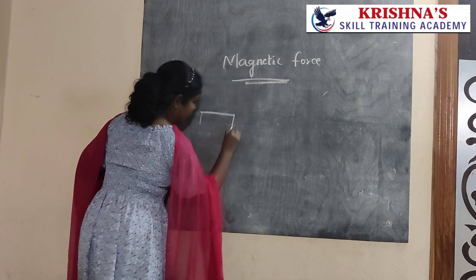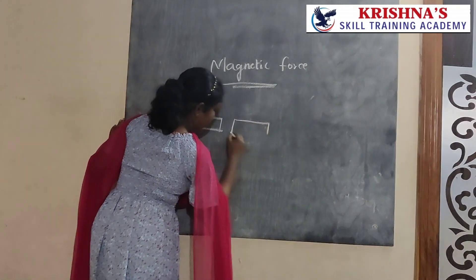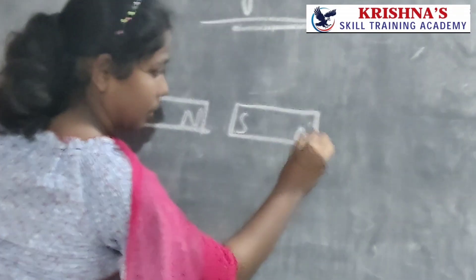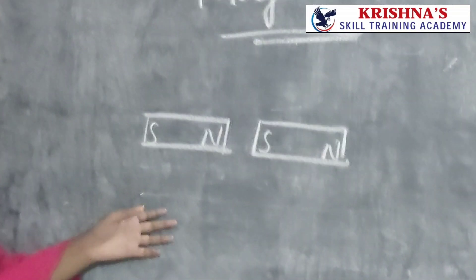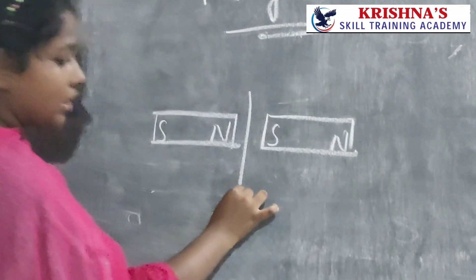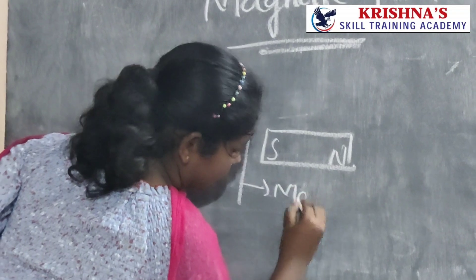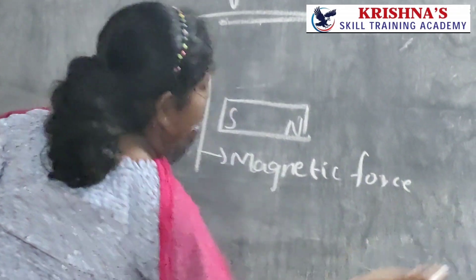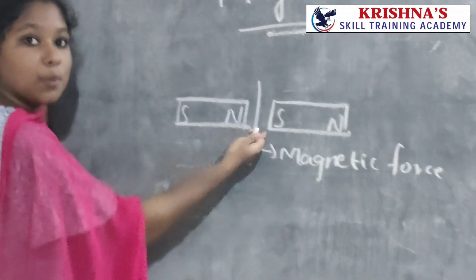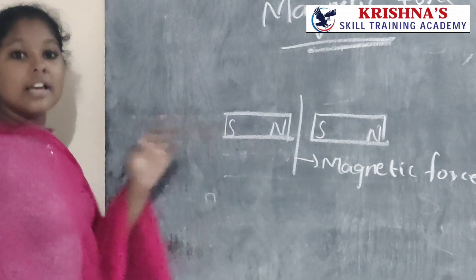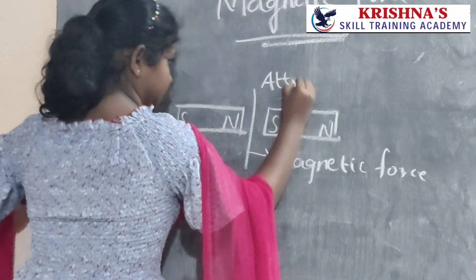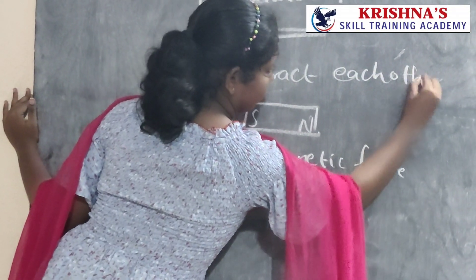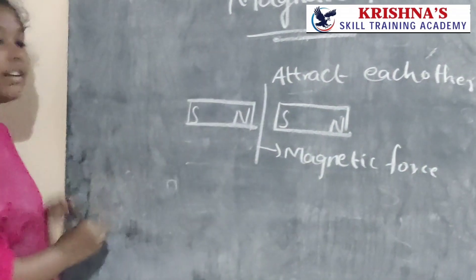Let us know one example of magnetic force. Let us take two magnets with different poles facing different directions. Here there is a force applied — that force is called magnetic force. If you bring these two different poles together, they will attract each other.